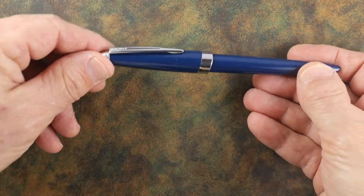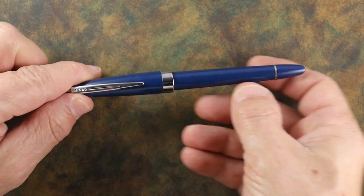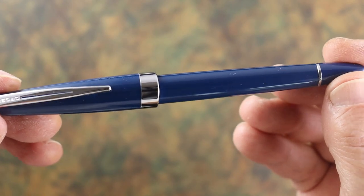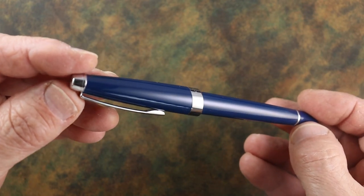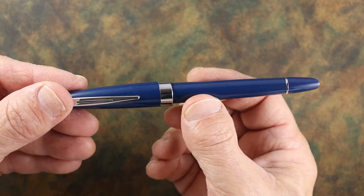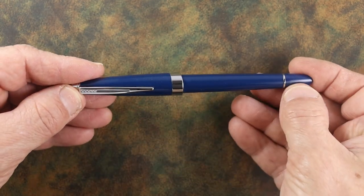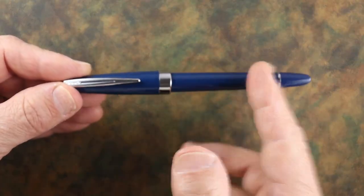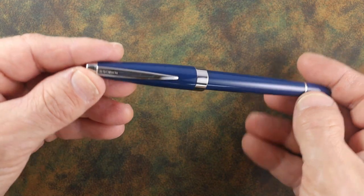Here we have the pen. They call it starry blue, but I wouldn't necessarily call it starry in that it doesn't have any kind of glitter or metallic look to it. I would call it a dark slate blue maybe, but maybe they're talking about night sky. Starry blue, let's go with that.